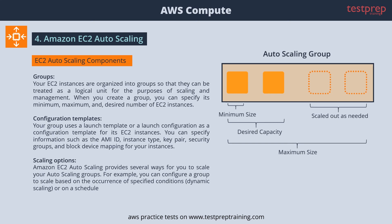The following are the key components of Auto Scaling. One: Groups. Your EC2 instances are organized into groups so that they can be treated as a logical unit for the purposes of scaling and management. When you create a group, you can specify its minimum, maximum, and desired number of EC2 instances.